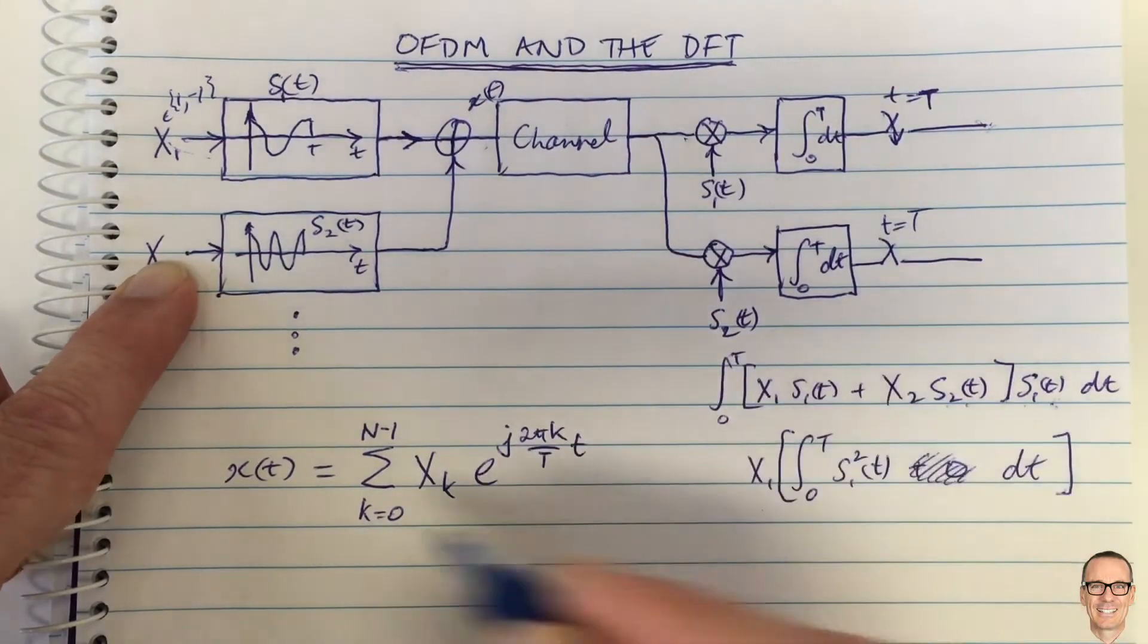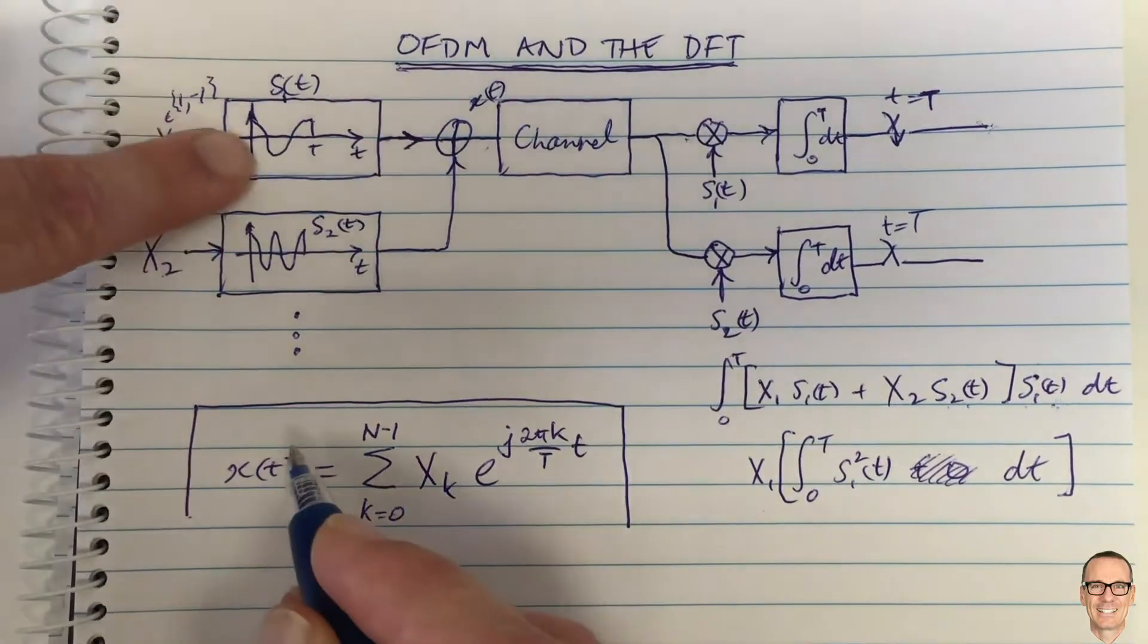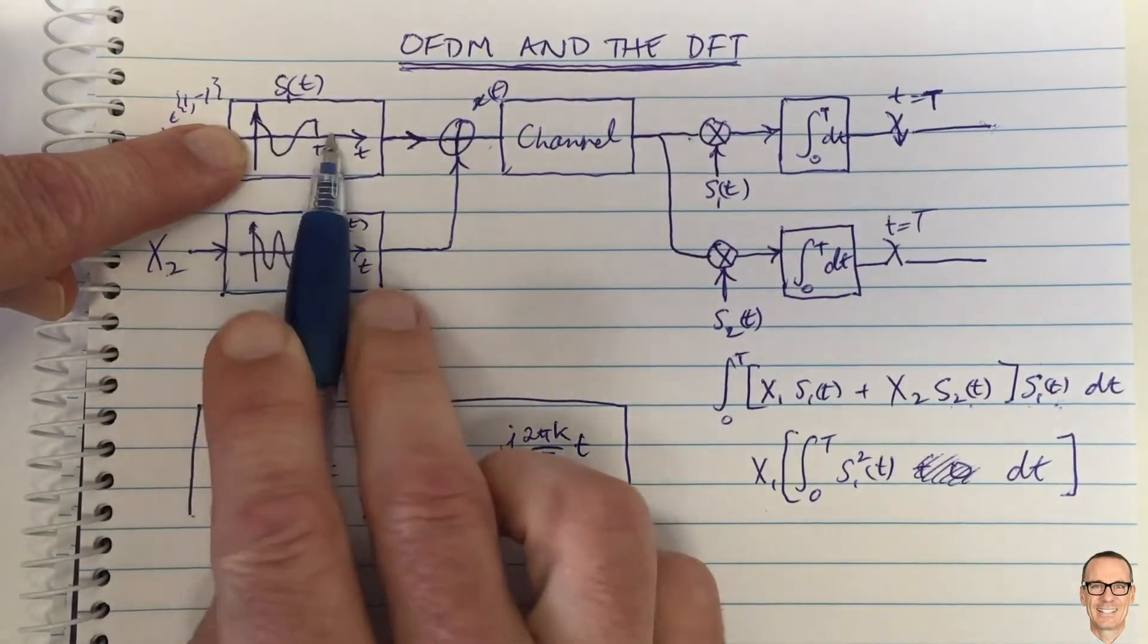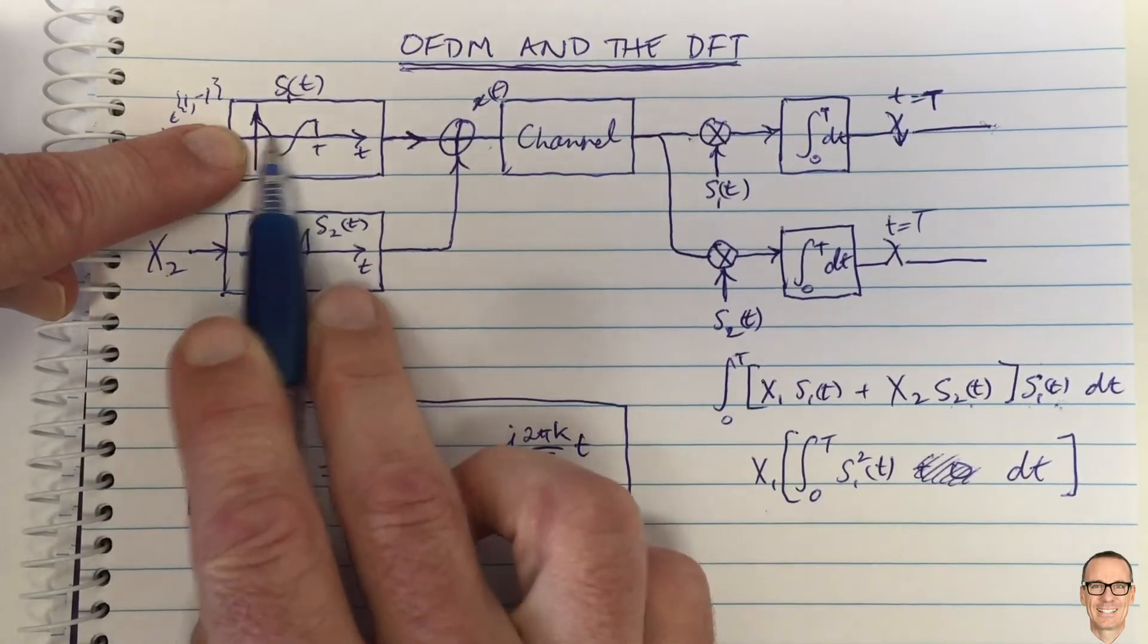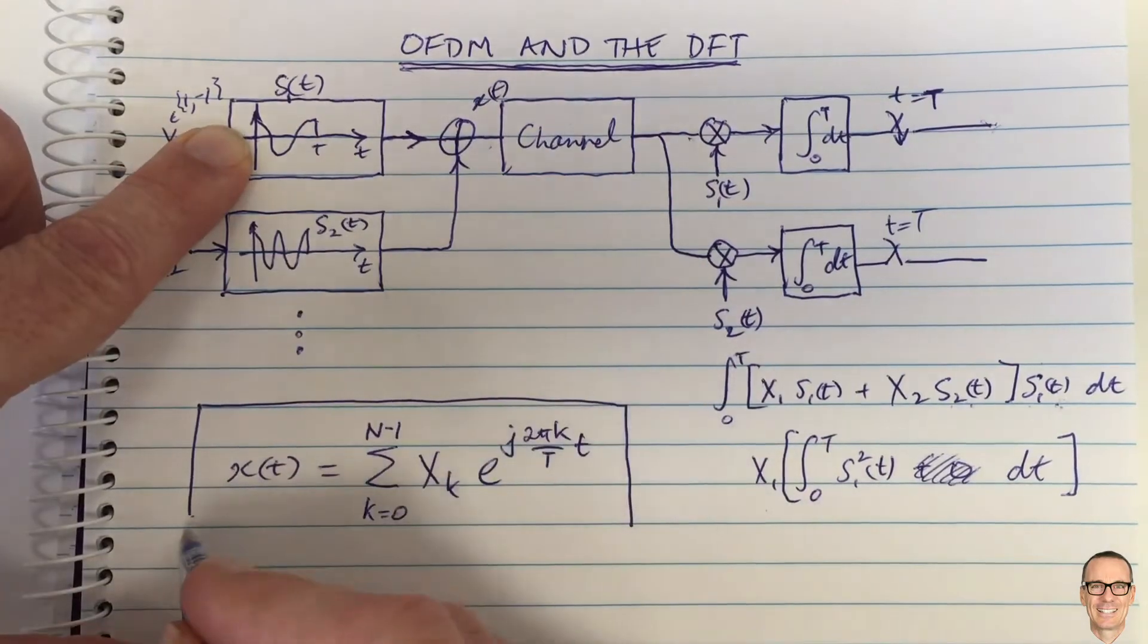I've only drawn here the cosine waveforms, but of course we could also on every channel send a sine waveform which would also be at the same frequency and also orthogonal. So the sinusoid is contained in this part of the equation here as well.